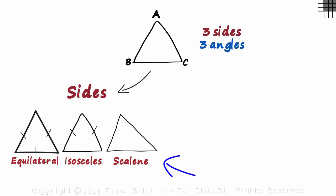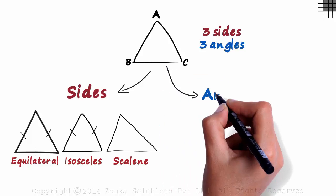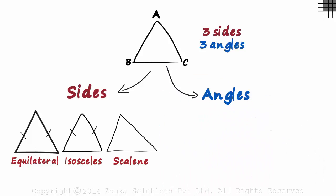That's how triangles are classified based on sides. What about the classification based on angles? If the triangle looks like this, where all angles are less than 90 degrees, it will be called an acute triangle. Remember, all angles less than 90 degrees.